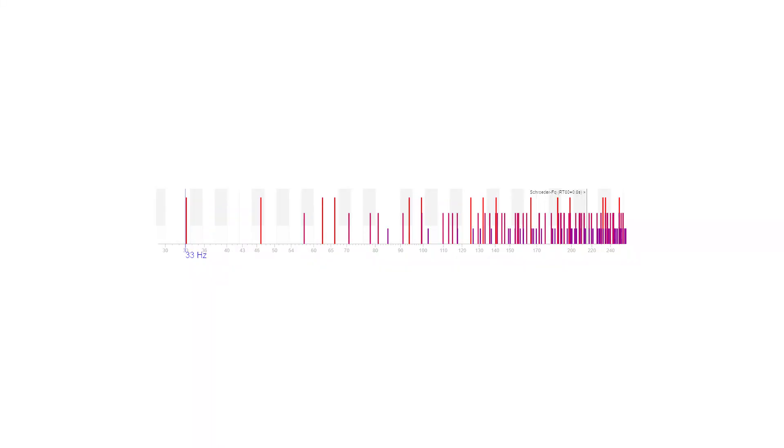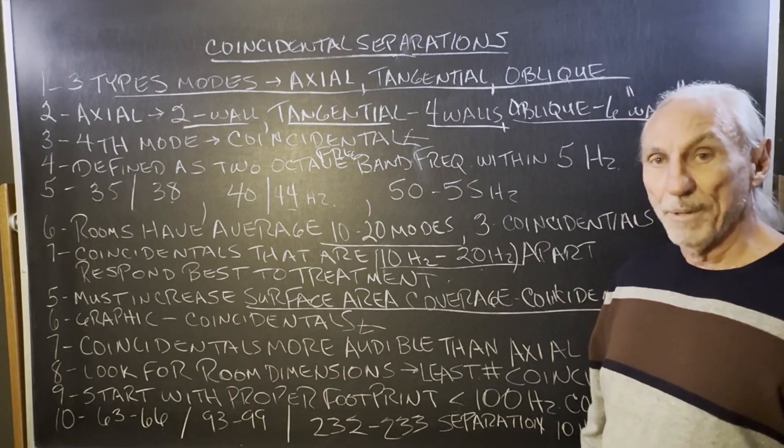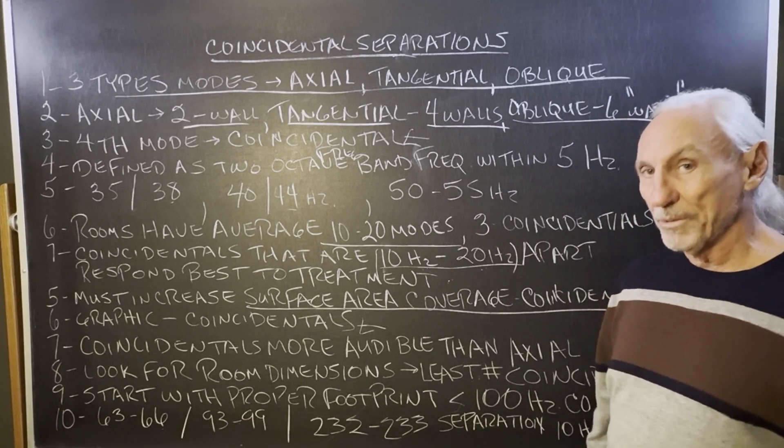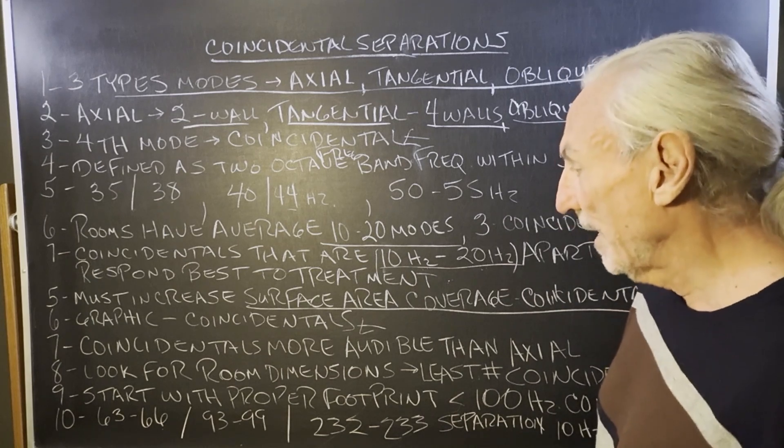You can see coincidentals. We got 63, 66, 93, 99, 232, 233, but they're all far enough apart, right? So the 60s and the 90s, the 230s. So we meet that 10 to 20 hertz requirement apart. So they're going to respond well to treatment and we can get a higher resolution.